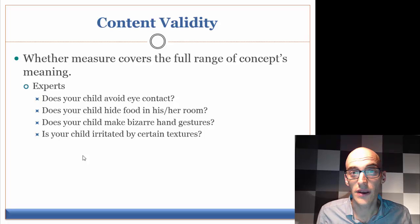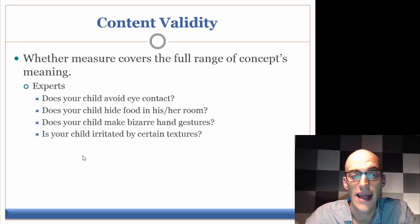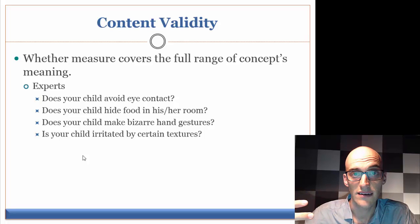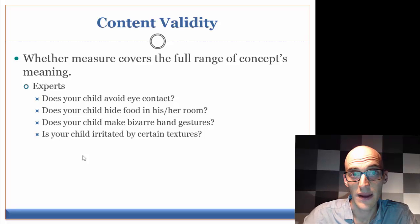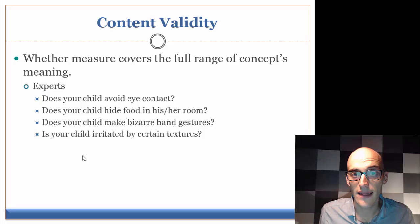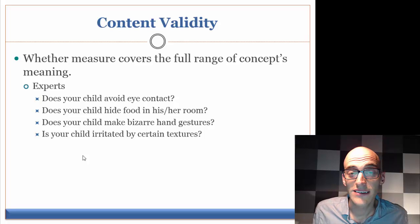Consider which of these four items doesn't seem to match: Does your child avoid eye contact? Does your child hide food in his or her room? Does the child make bizarre hand gestures? Is your child irritated by certain textures? If you have any expertise working with children, you'd probably notice the second item doesn't fit. The other three seem to be measuring Autism Spectrum Disorder — avoiding eye contact, making bizarre hand gestures, being irritated by certain textures — while hiding food in their room could relate more to neglect or attachment disorders. Assessing content validity typically comes down to expert judgment.